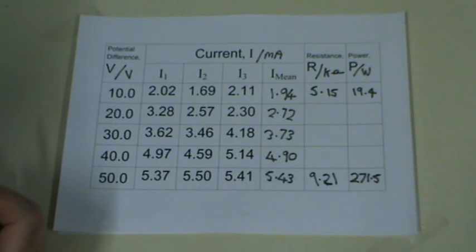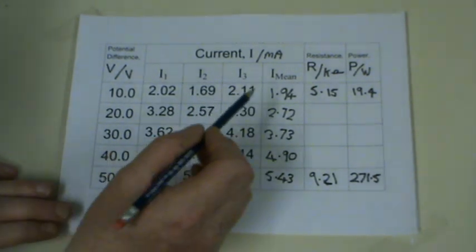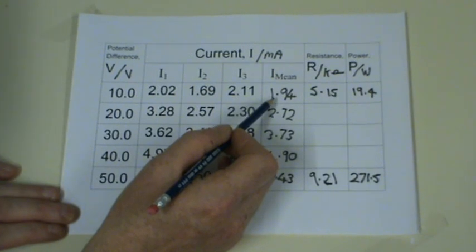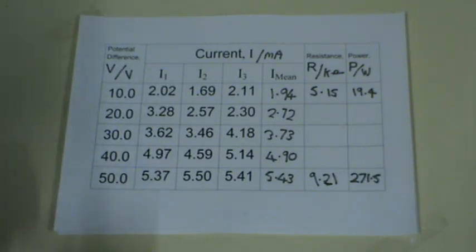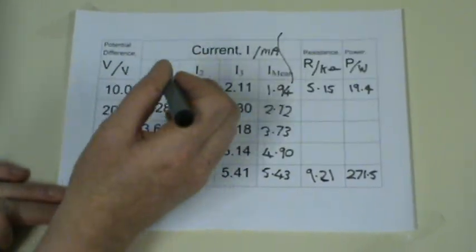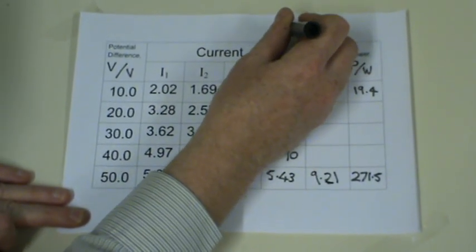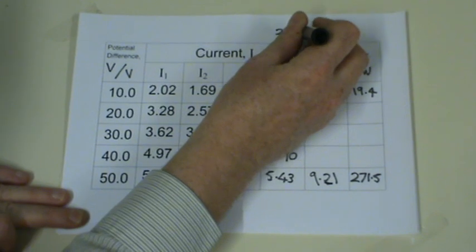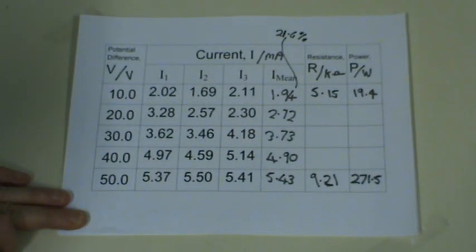To calculate the uncertainty, we do 0.42 divided by 1.94, then multiplied by 100 to give us a percentage. Our percentage error comes out at 21.6%. That's the uncertainty in that reading.